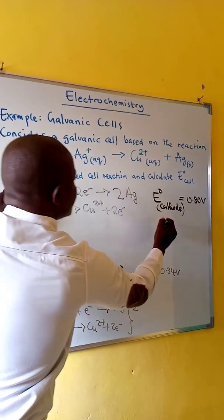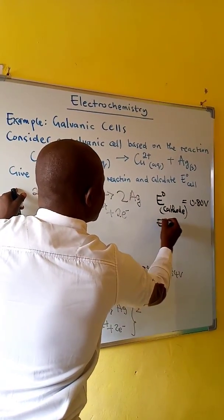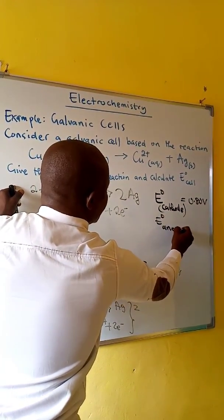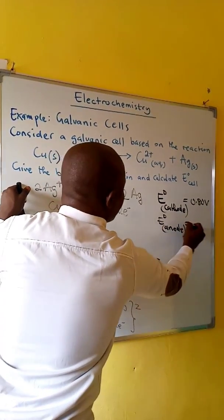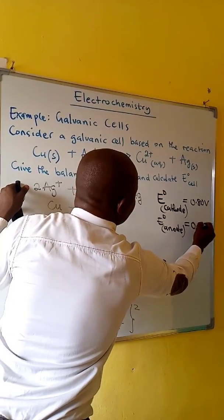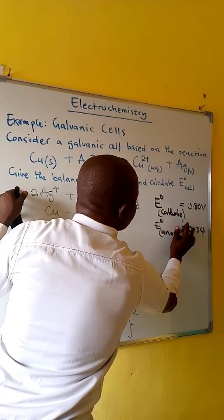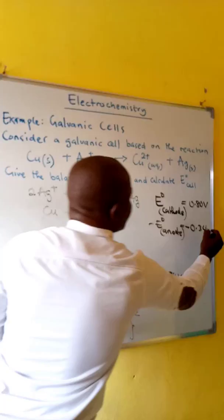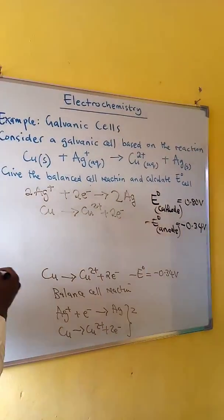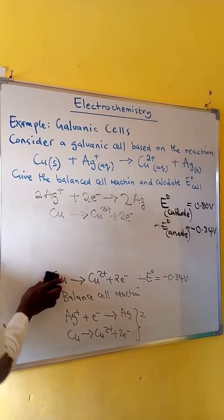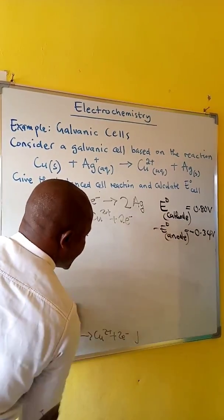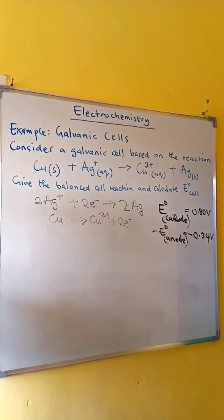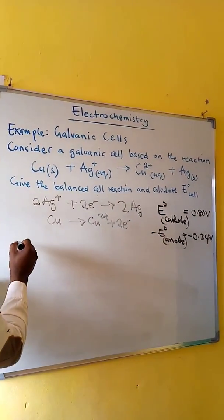This one, this is a reduction which occurs at the cathode. Oxidation occurs at the anode. This is negative 0.34 volts. So, we now need to write the cell reaction.